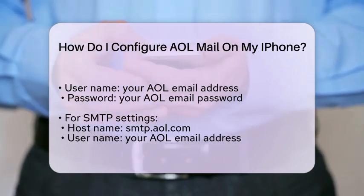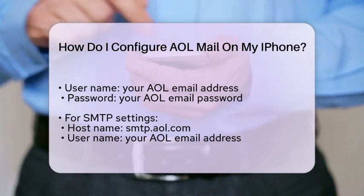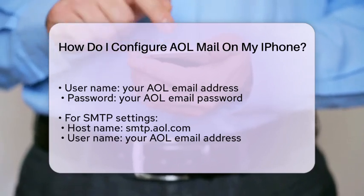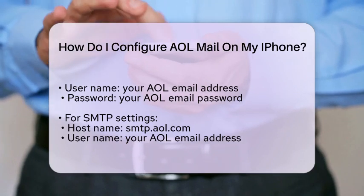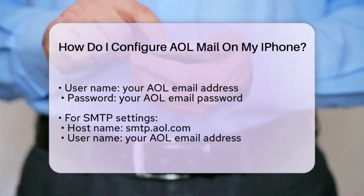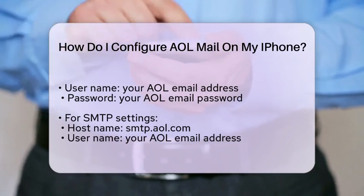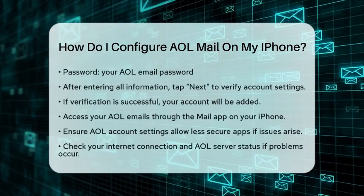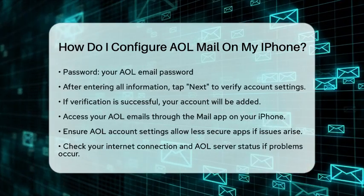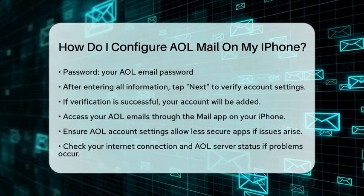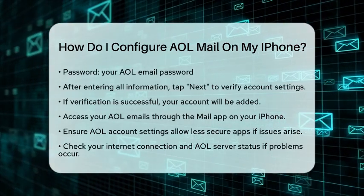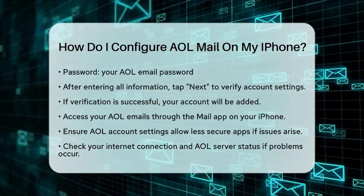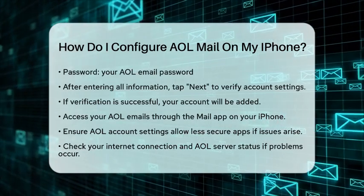After entering all the required information, tap Next to proceed. Your iPhone will try to verify your account settings. If everything is correct, you will see a confirmation that your account has been added successfully. Now you can access your AOL emails by opening the Mail app on your iPhone. Your AOL account should now be listed among your email accounts.